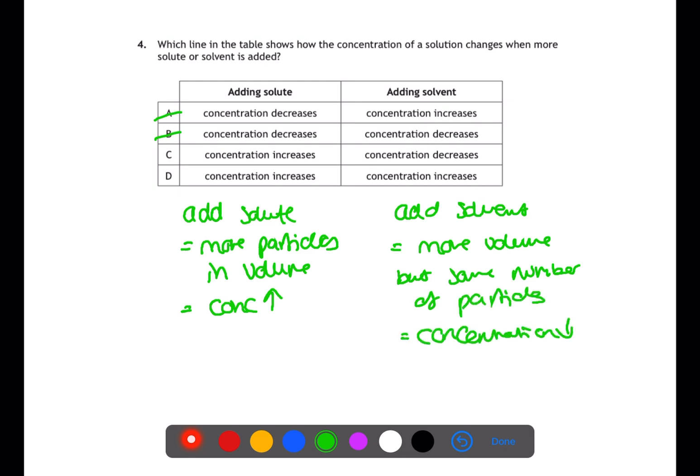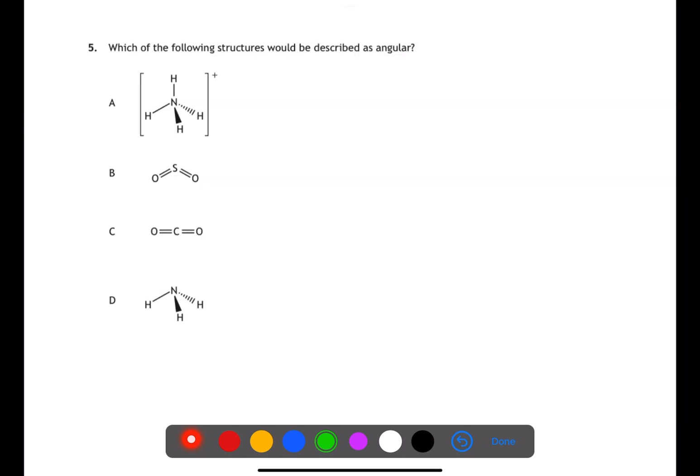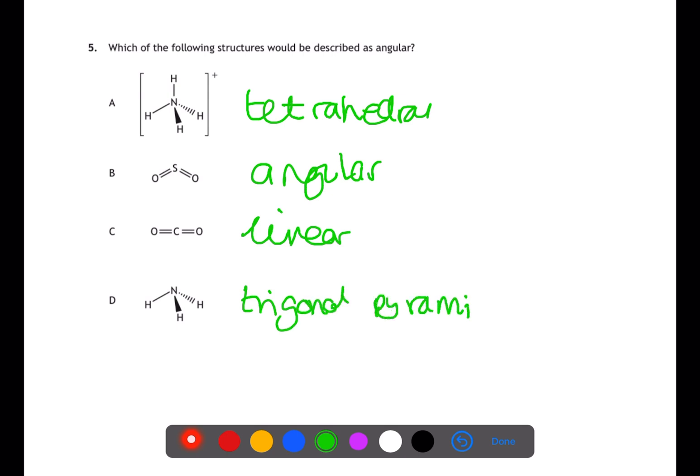You should be familiar with the different shapes of covalent molecules. The first shown here is tetrahedral, the second is angular, the third is linear, and the last is trigonal pyramidal. You've been asked which of these would be described as angular. It's SO2, which is answer B.